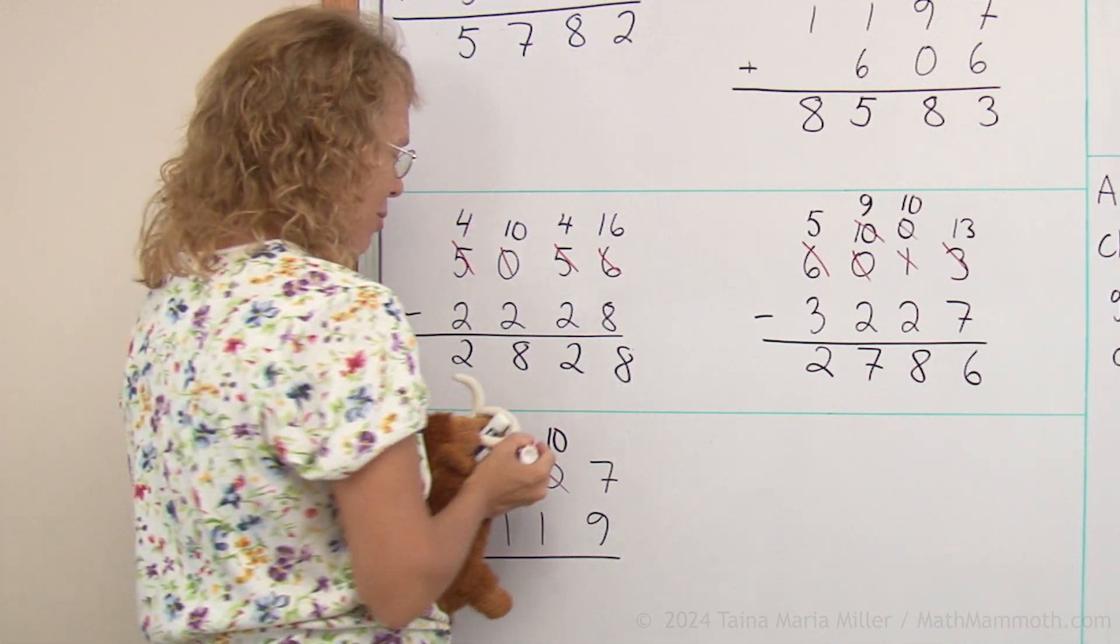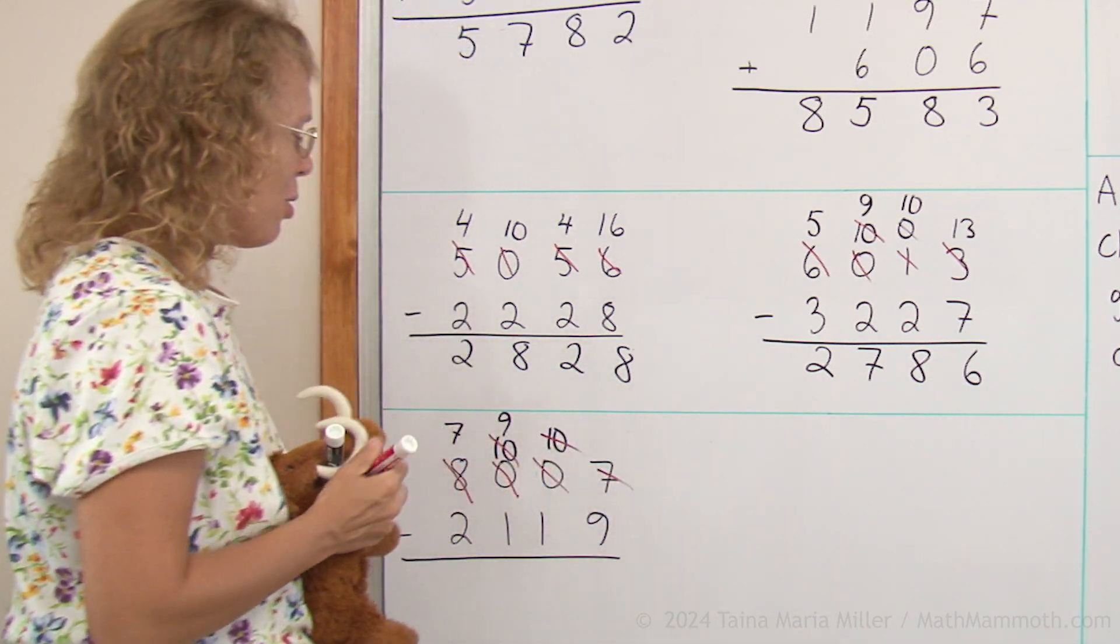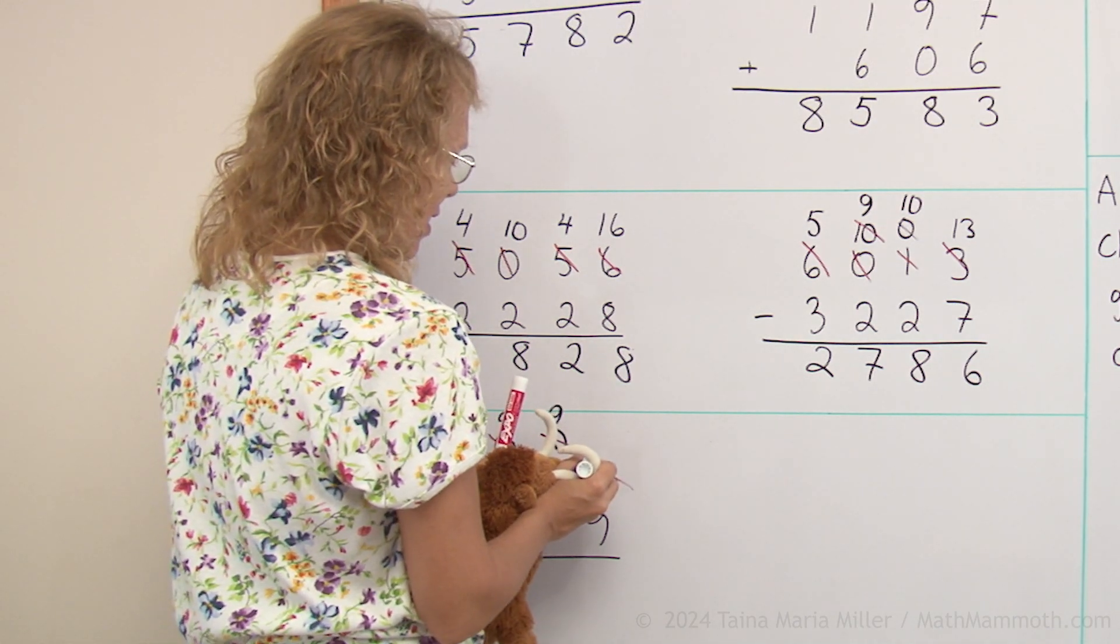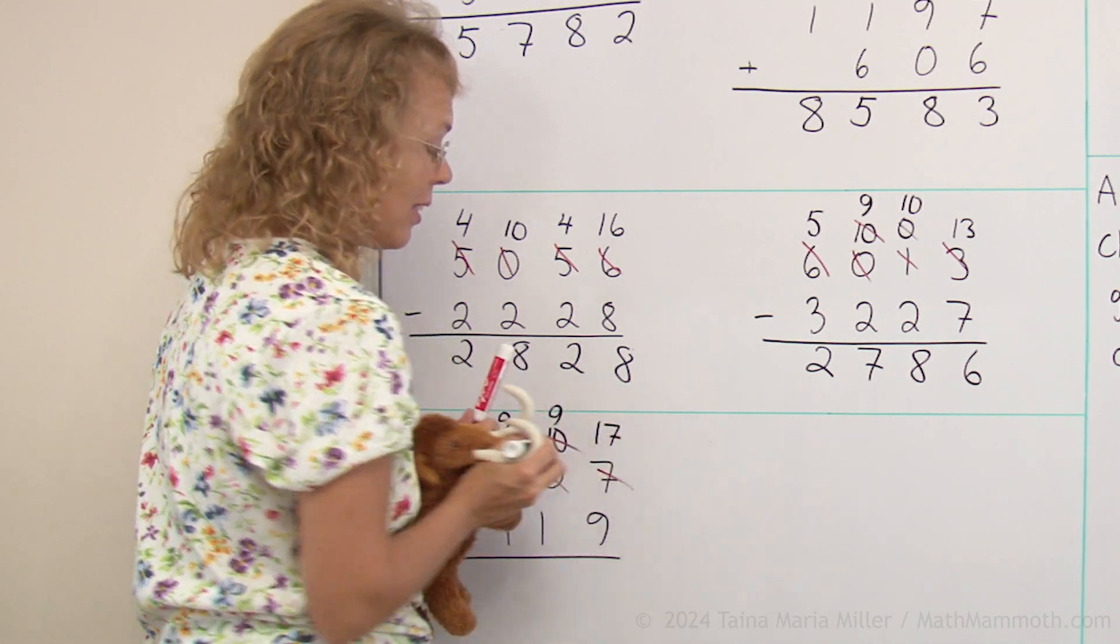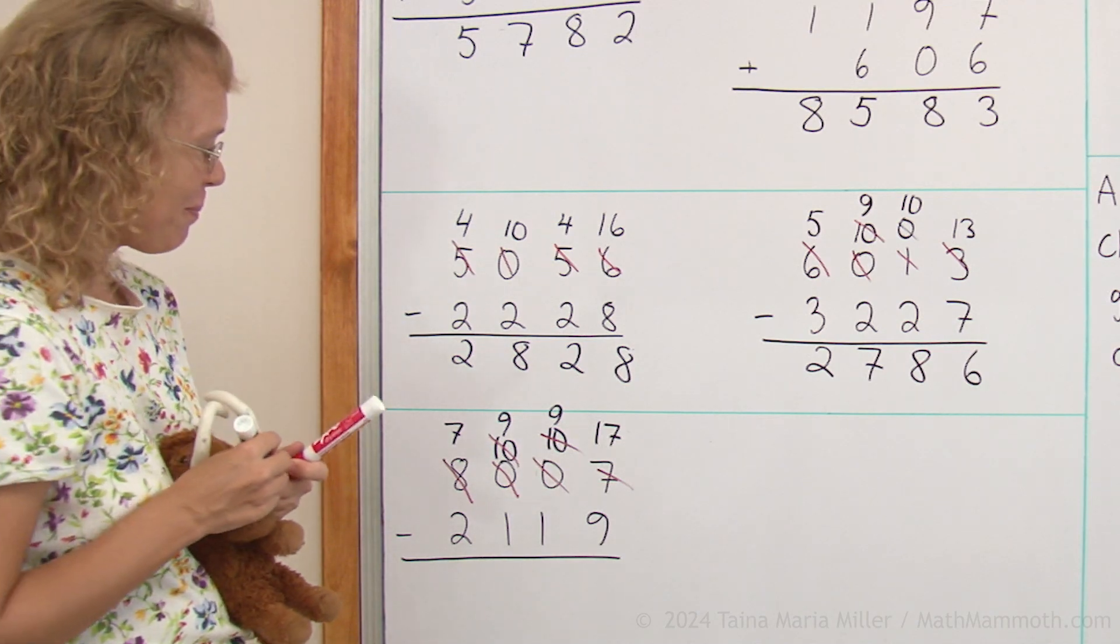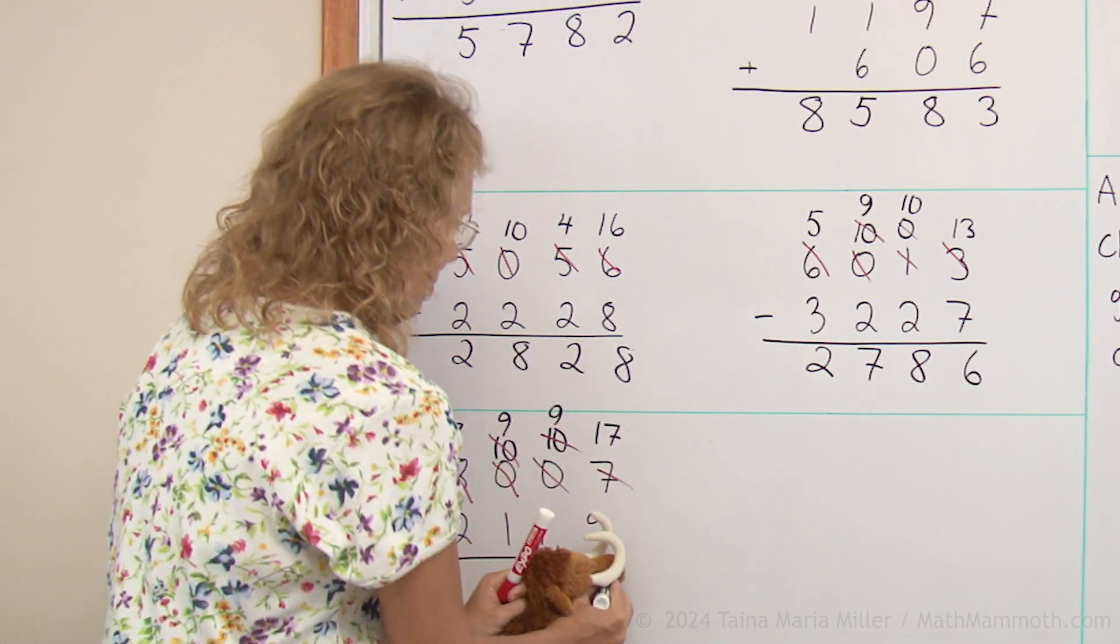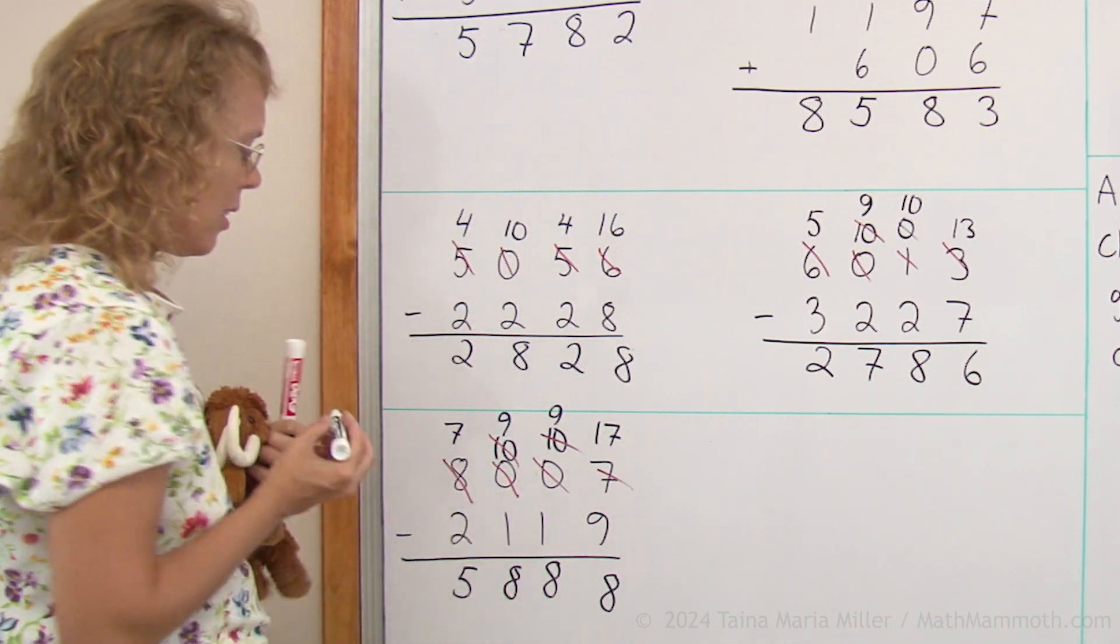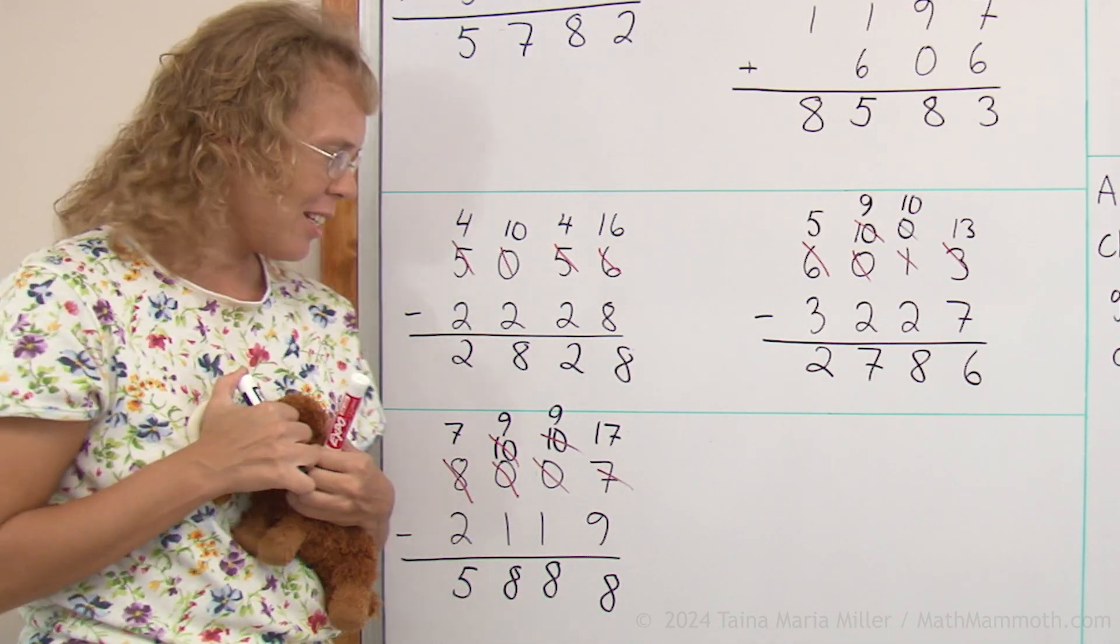And still, one more time, regroup. Cross out those, leaving nine tens, and then over here we get 17 ones. Now, subtractions. Here's eight. Lots of eights. All right. Did we get that right? Let's check.